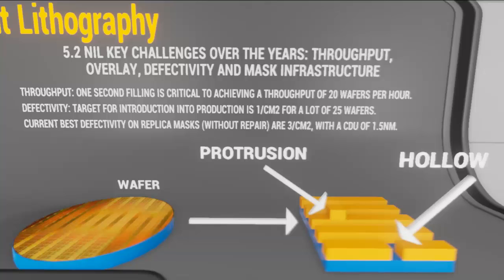Standard practice for imprinting involves creating a master template and using it to create replica masks, and replicas of the replica masks to do the actual imprinting. Imprinting lithography requires a mask infrastructure that addresses both master imprint masks and replica masks. Zero-defect masks with a dimension of 26 nm have been demonstrated and used to fabricate replica masks. Current best defectivity on replica masks without repair is 3 per square centimeter with a critical dimension uniformity of 1.5 nm. We can see two types of defects occurring in NIL molds: protrusion and hollow defects, which correspond to the opaque and clear defects in photomasks.